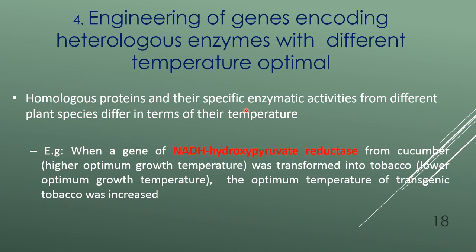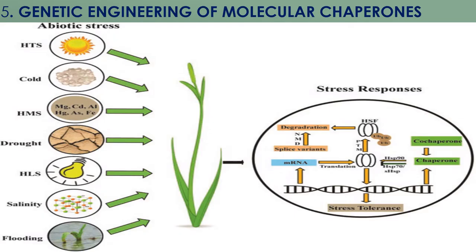Engineering of genes encoding heterologous enzymes with different temperature optima: homologous proteins and their specific enzymatic activities from different plant species differ in terms of their temperature optima. For example, when the gene of NADH hydroxypyruvate reductase from cucumber, which has a higher optimum temperature, was transferred to tobacco, which has a lower optimum temperature, the optimum temperature of the transgenic tobacco was increased.